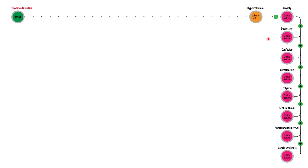It's important to memorize the different causes as a constellation or cluster of clinical features. For exams, they might ask which additional clinical feature you might see — for example, a patient with hypertension taking thiazide diuretics who now has hints of hypercalcemia or elevated serum calcium. Memorizing the more specific features is very helpful; focus on polyuria, nephrolithiasis, and the shortened QT interval as the most common exam answers.